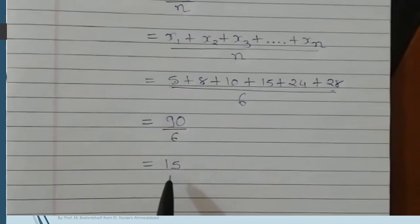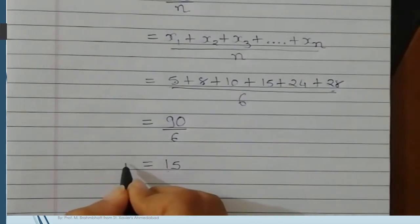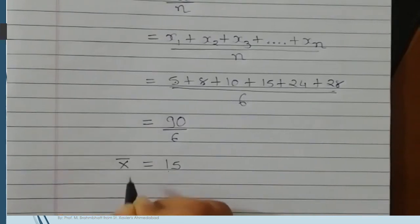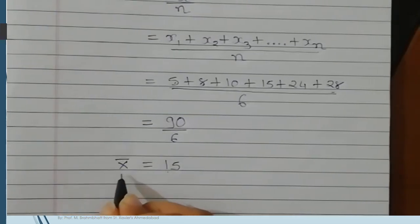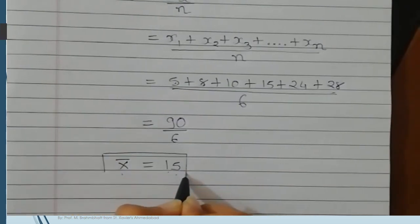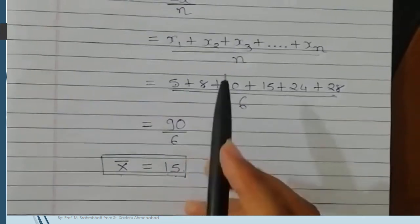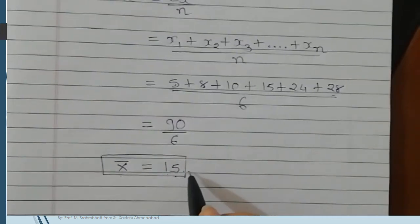Before writing the final answer, remember you have to mention the symbol which is x bar. x bar equals 15 and try to make a box. If the weightage is given in the question, you have to mention the weightage here. You will get the marks for it.